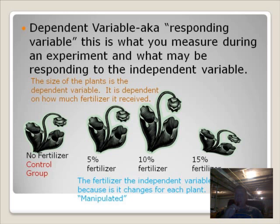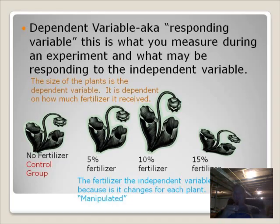Our first group, the no-fertilizer control group, we can see that it grew a little bit. The 5% fertilizer grew a little bit larger, so we can definitely say that the fertilizer — because of that control group — is having an effect on plant growth. The 10% fertilizer grew the biggest, and then 15% fertilizer must have been too much and it was killing the plant.